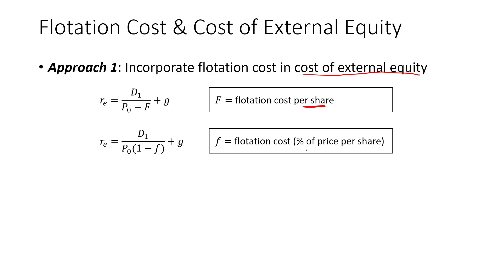The flotation cost can also be expressed as a percentage of price per share. For that, we use the current share price multiplied by 1 minus the flotation cost. We then use this cost of equity to calculate the WACC — the Weighted Average Cost of Capital — and use it to evaluate the cash flows of the project to calculate the net present value.